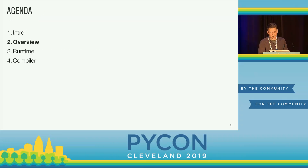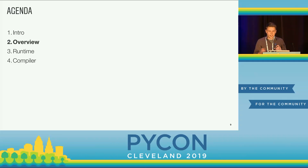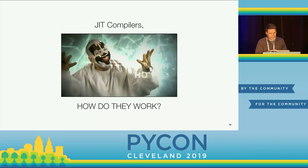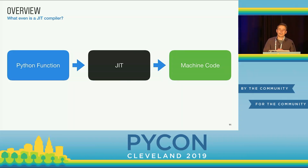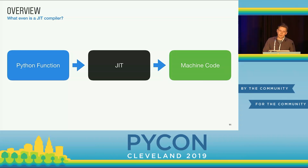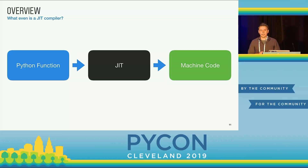So first off, let's go over at a high level what we're going to build. What even is a JIT compiler? For the purposes of this talk, it's something that translates Python code into machine code at runtime — so it's compiling while your program is running. This is where the JIT comes from; that stands for just-in-time. So you take a Python function, you stuff it into this magical black box, and out pops some native code. There are lots of different kinds of JIT compilers, but we're going to focus on a simple method-at-a-time template JIT, and we'll see what that means as the talk progresses.